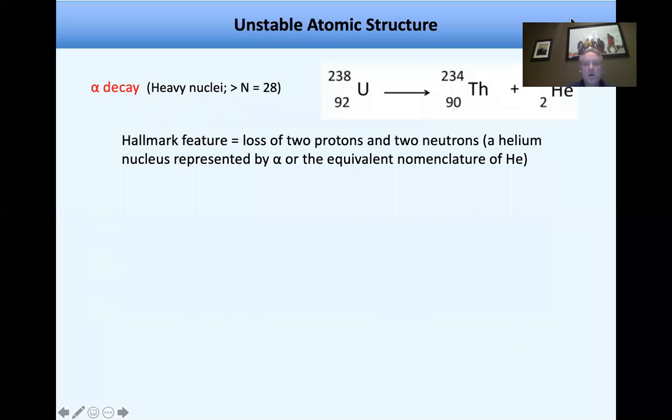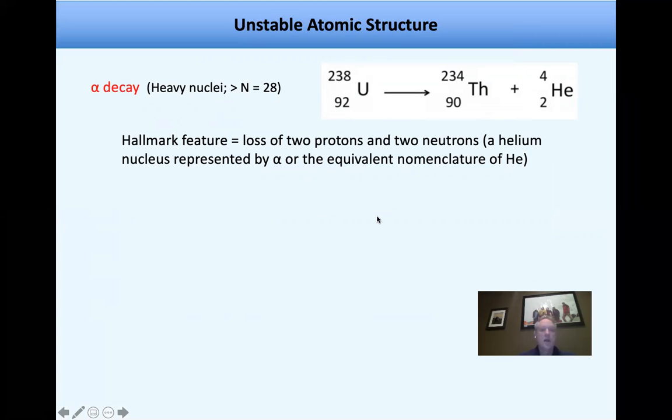And then we have to go into unstable atomic structures and look at alpha, beta, and gamma decay. So alpha decay only occurs with heavy nuclei. You have to be N is greater than 28. Over here, you see uranium-238, a very famous one used in making atomic bombs. And so U-238 is going to decay into thorium-234. And then you emit what appears to be helium. And actually, alpha decay is basically equivalent to helium. So in alpha decay, what do you do? You lose two protons and two neutrons, which is basically helium.